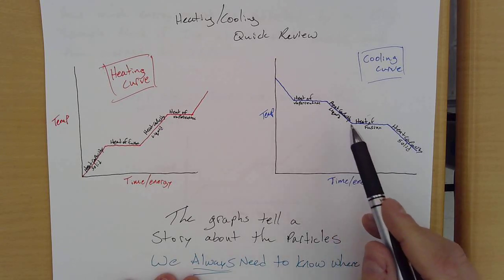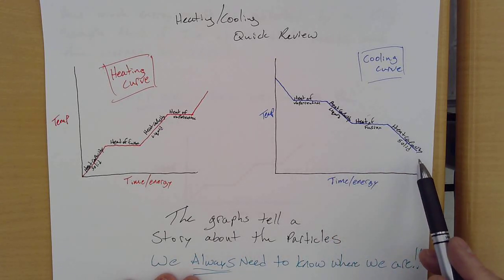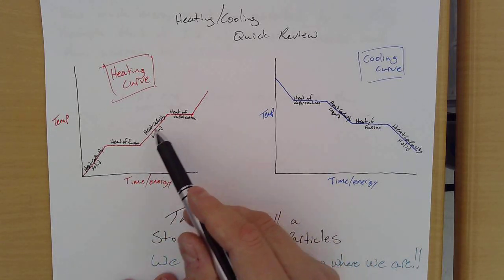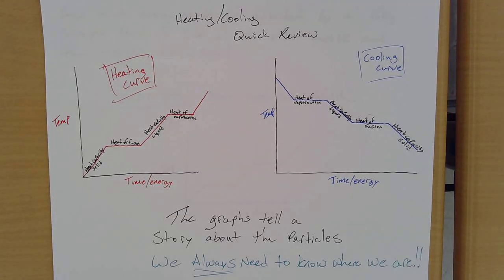So we're losing energy in cooling curves, our system is giving it away, and a heating curve, our system is absorbing energy, it's taking it in. And each section of the line, we need to know where we are, because that's going to dictate what we can use for conversion to find energy, or temperature, or grams, we need to use these to help us.